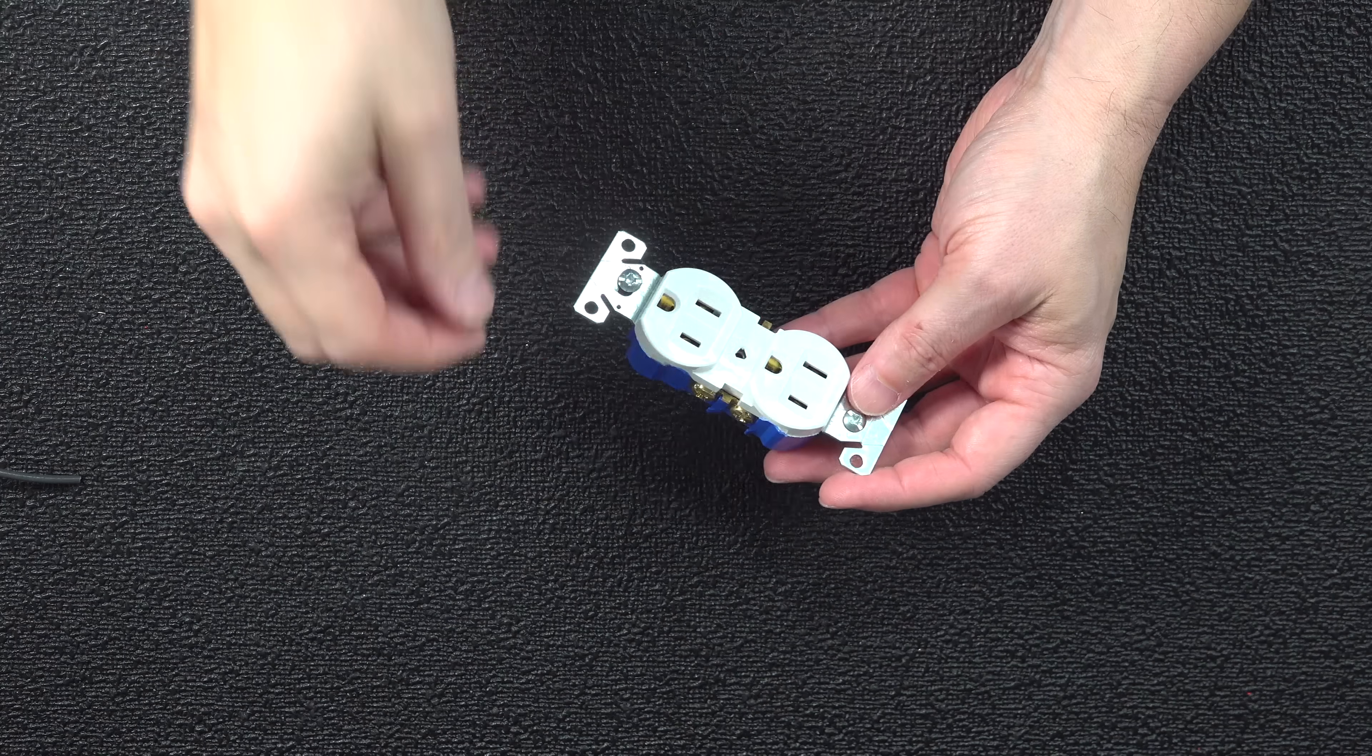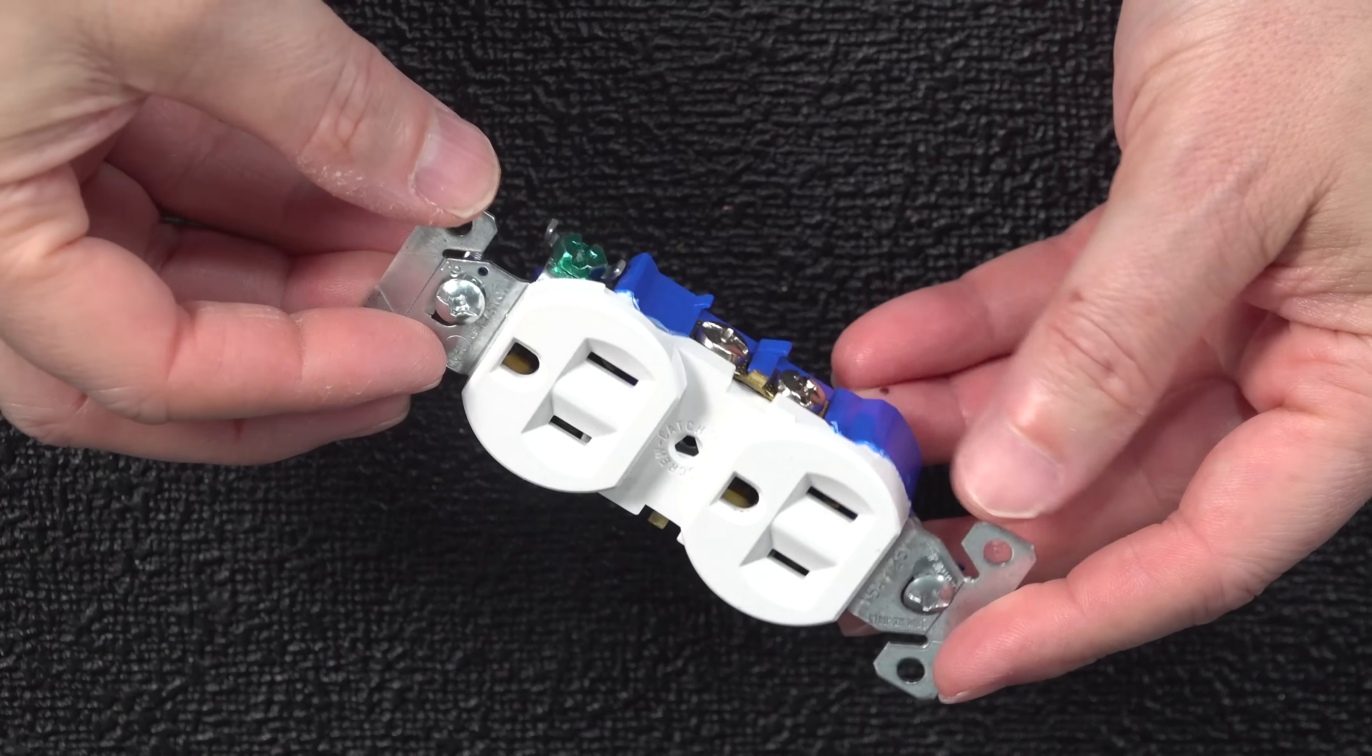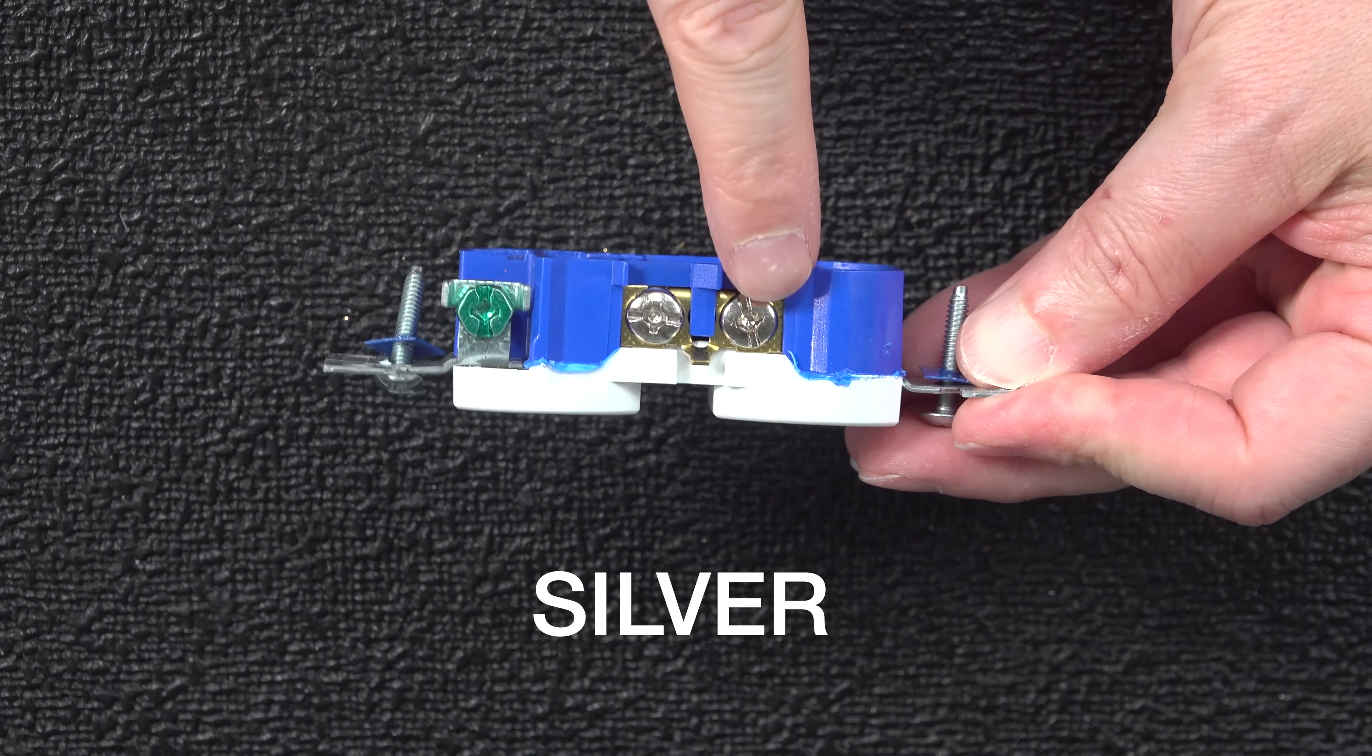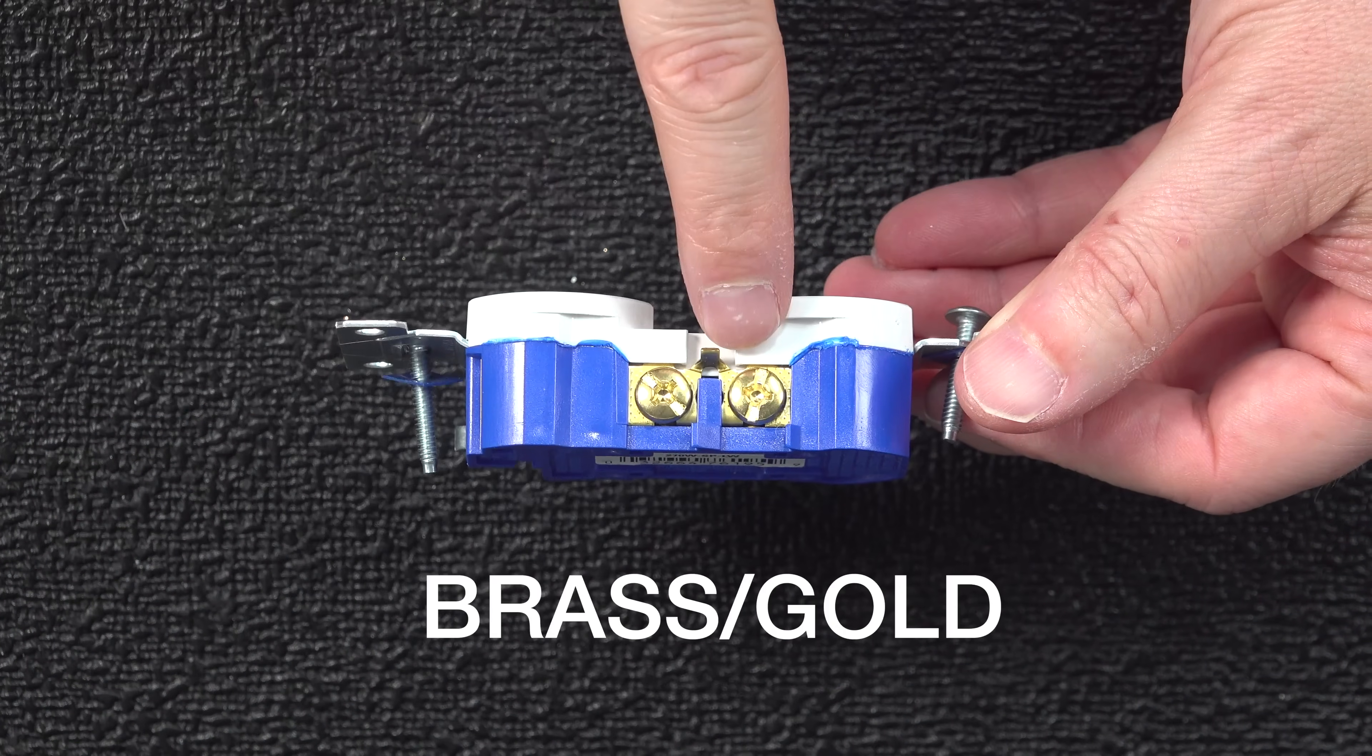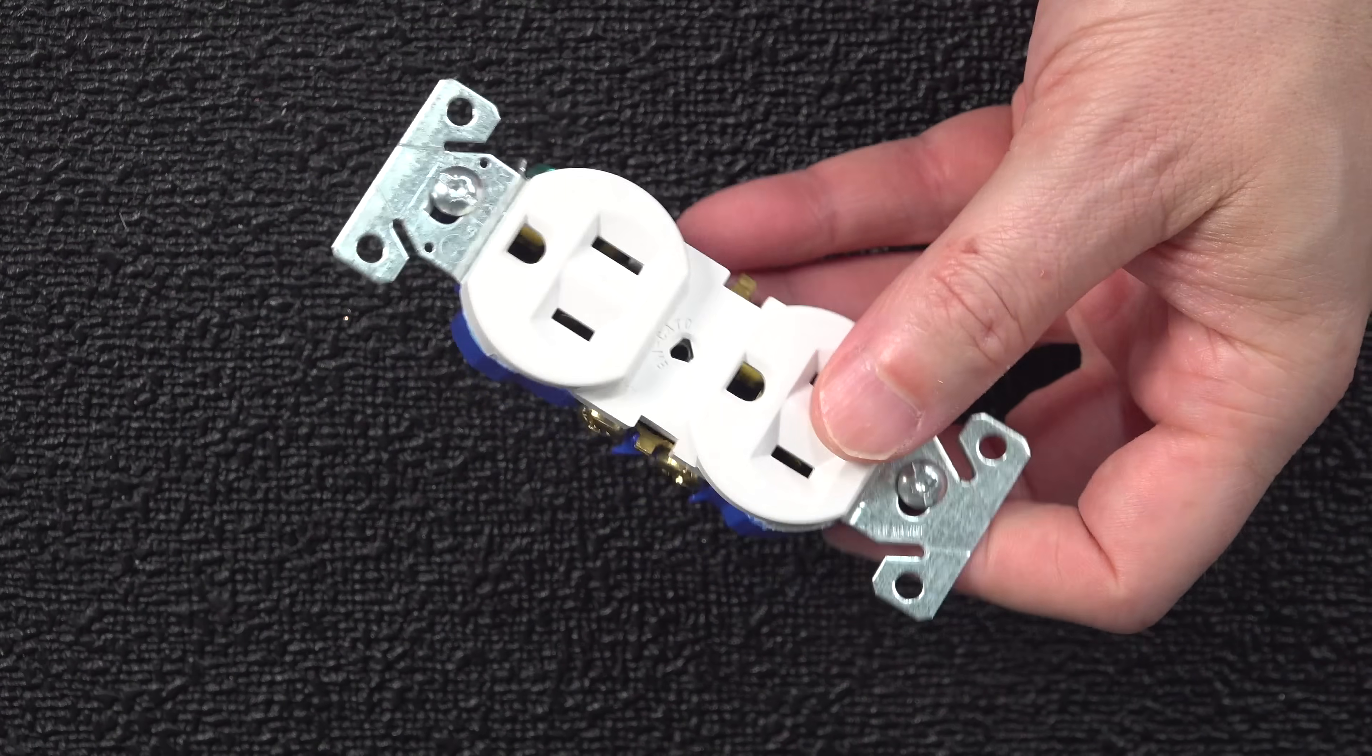The number one mistake people make when wiring up an outlet is they connect the wrong wire to the wrong terminal. Now when you look at an outlet, you might never have noticed that two of the screws on one side are silver and the other two are brass or a kind of goldish color. And this is the built-in guide in every US outlet to help you do the job correctly.